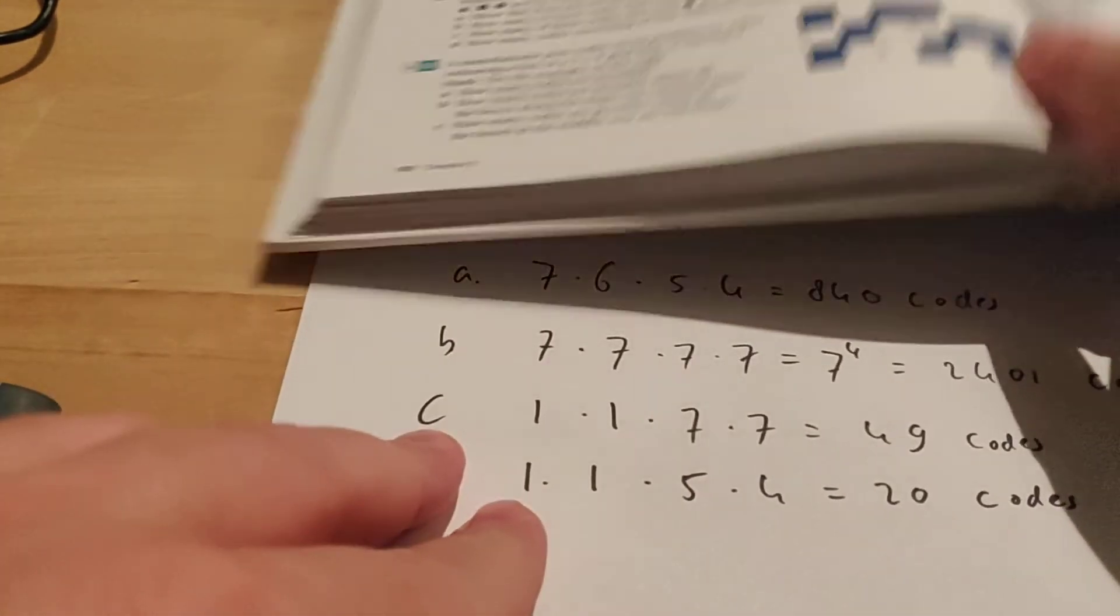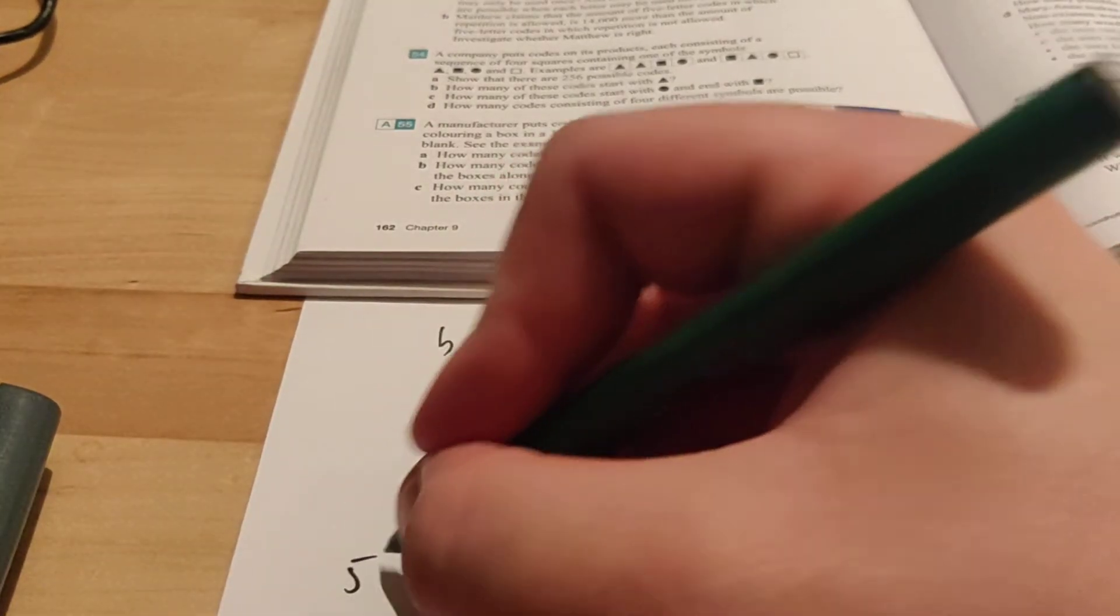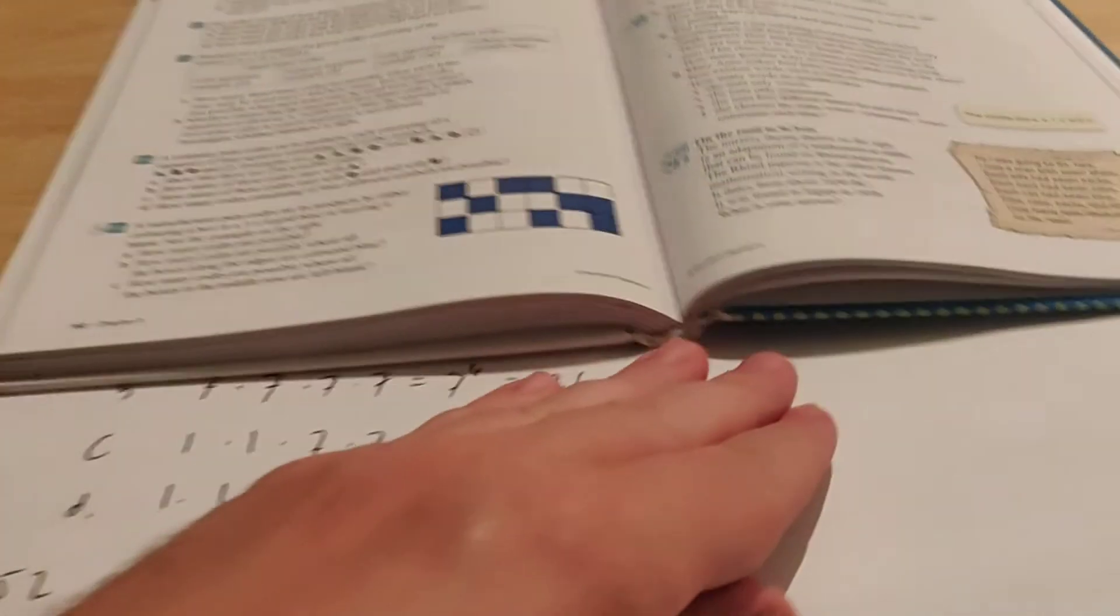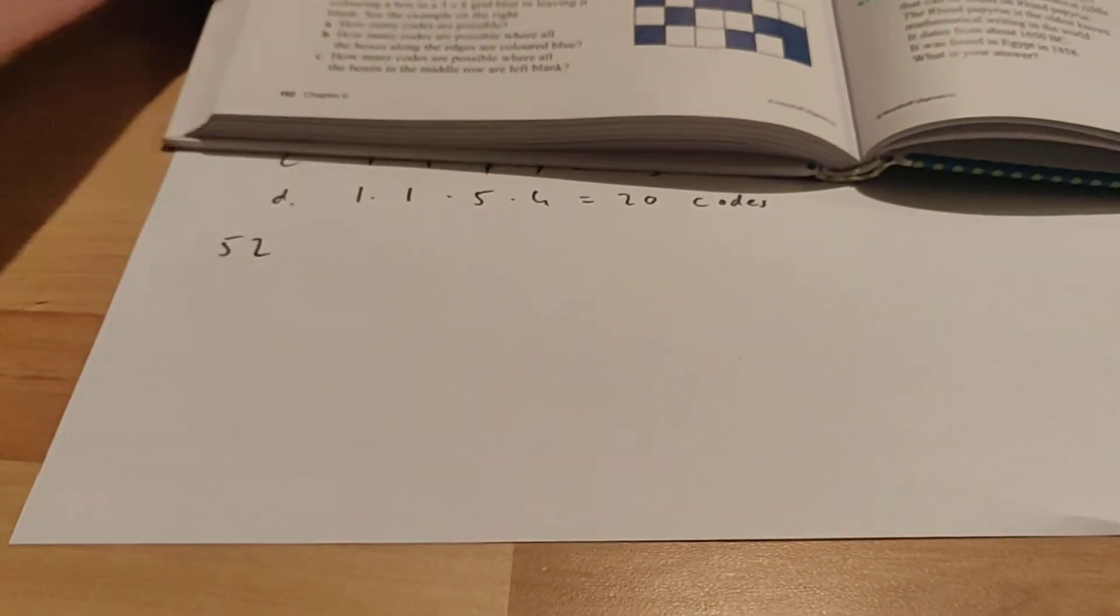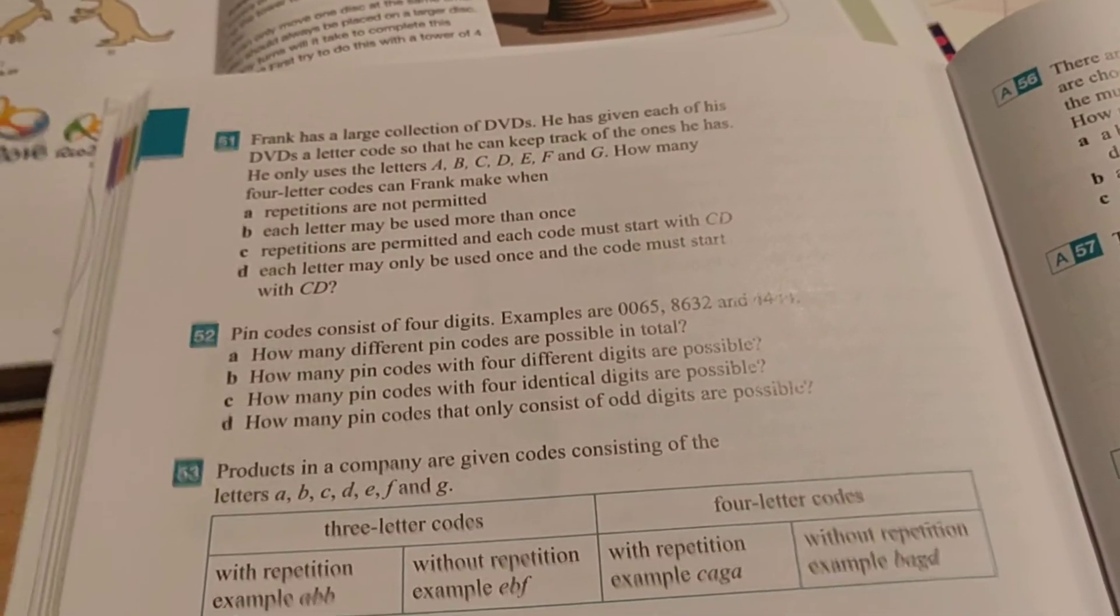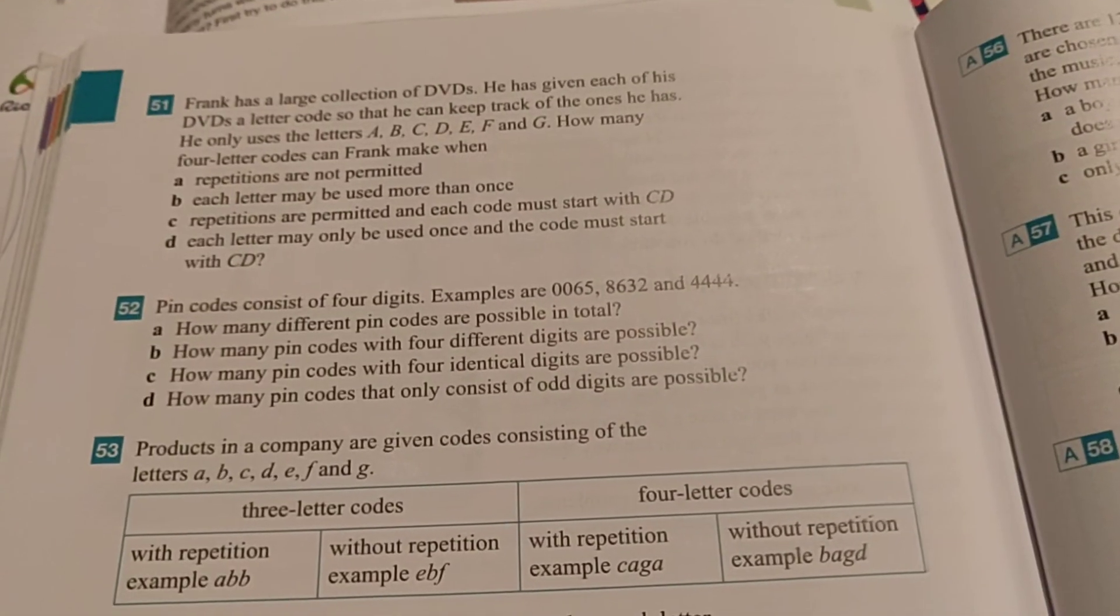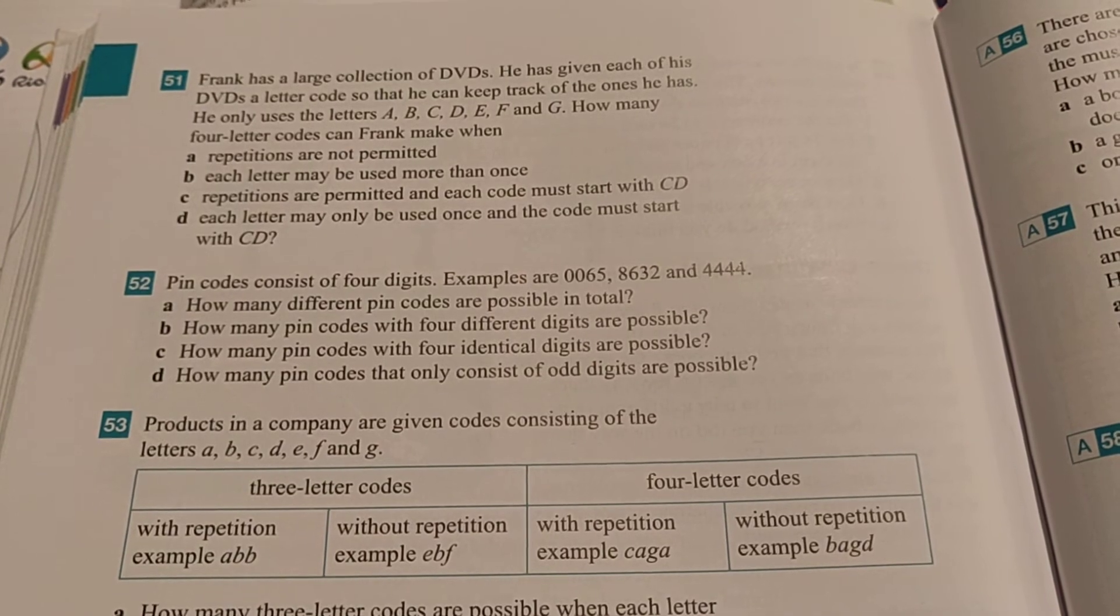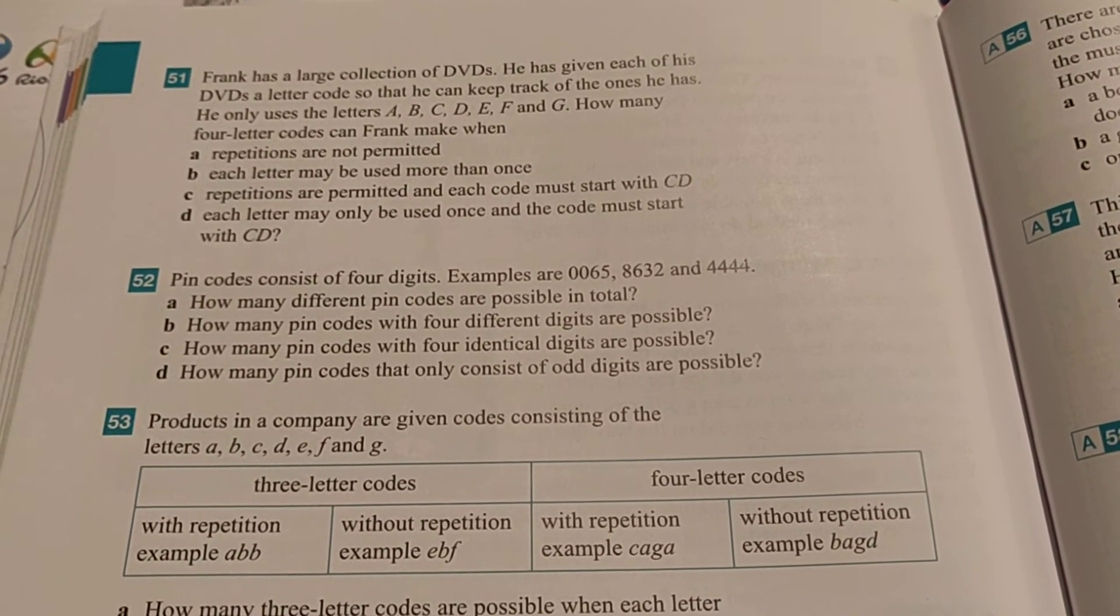In this video, I'm also going to be talking about exercise 52. All right, so let me move this paper a bit. And let's take a look at exercise 52 here. It says pin codes consist of four digits. Examples are 0065, 8632 and 4444.